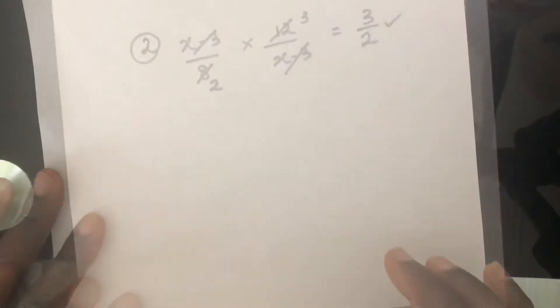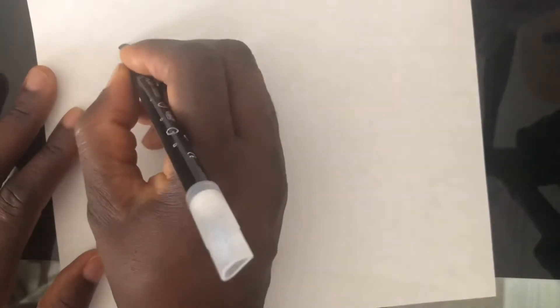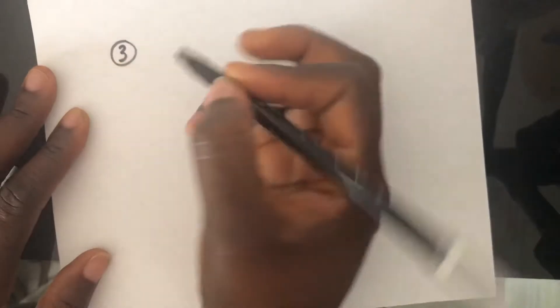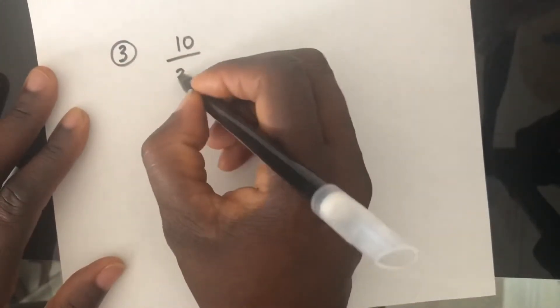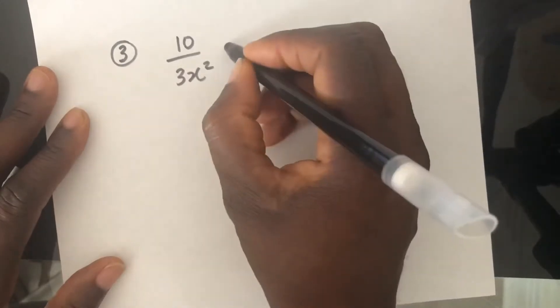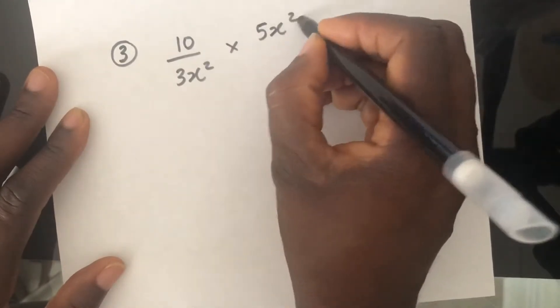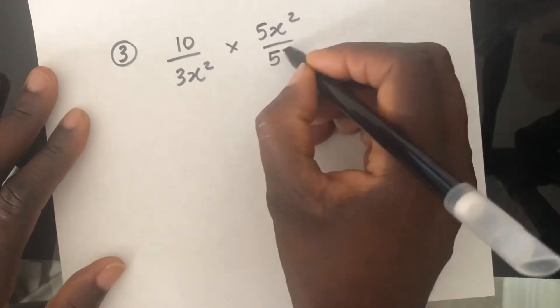And sometimes it gets a bit more complicated. So let's look at something much more challenging. Question 3 would be 10 over 3X squared times 5X squared over 55.